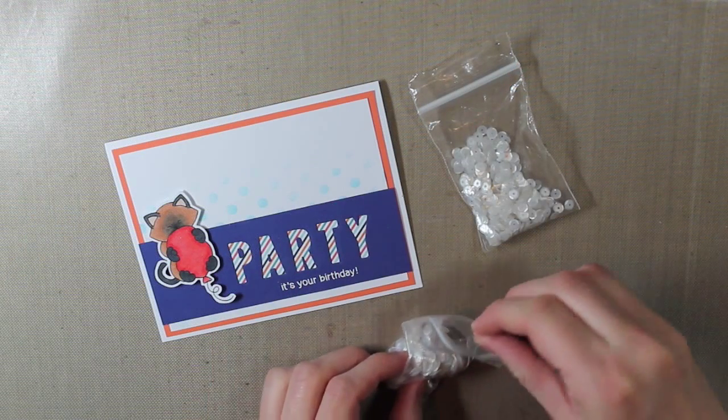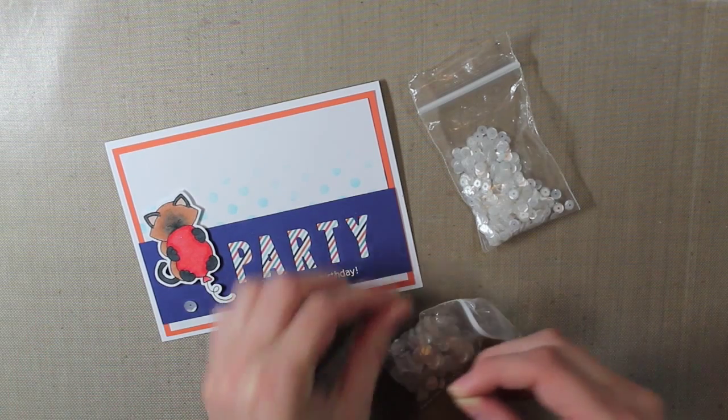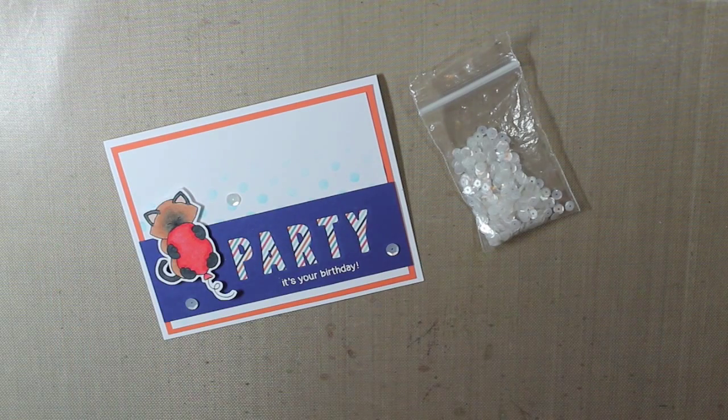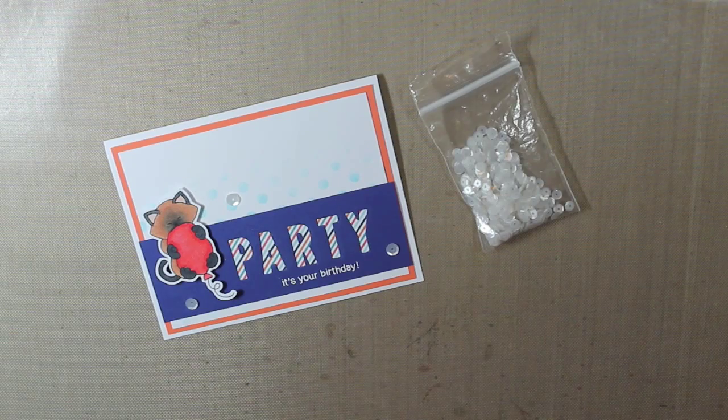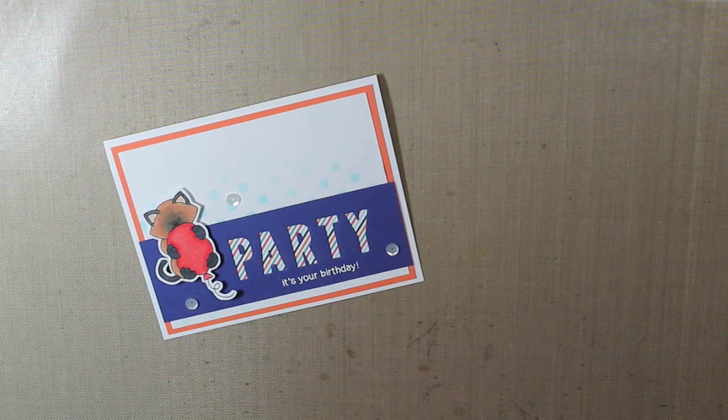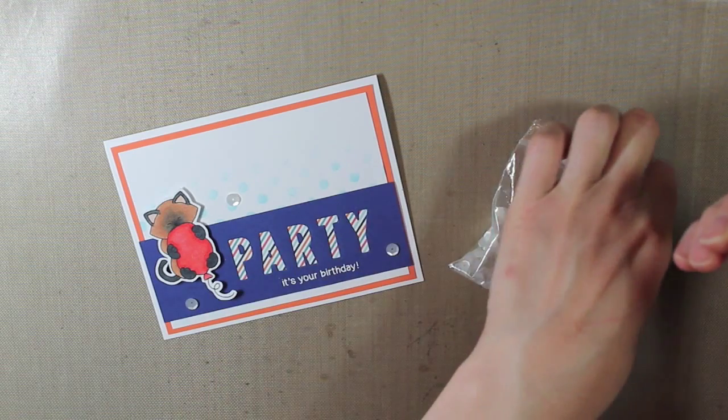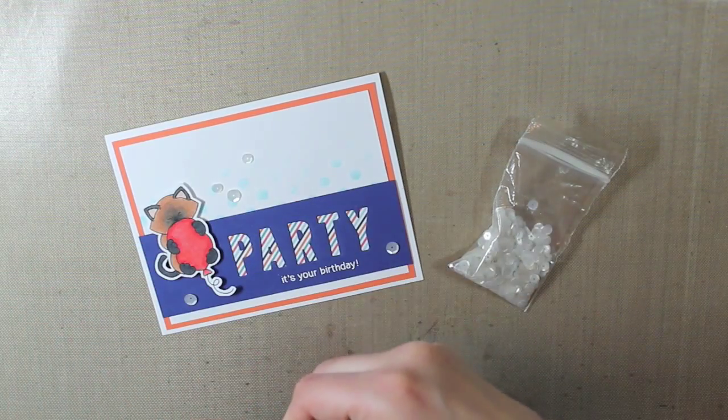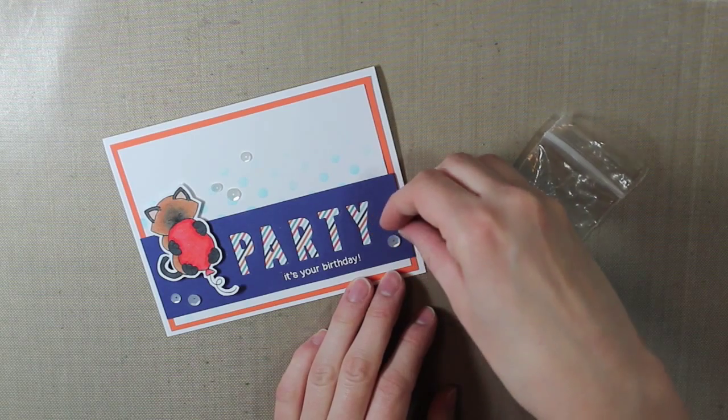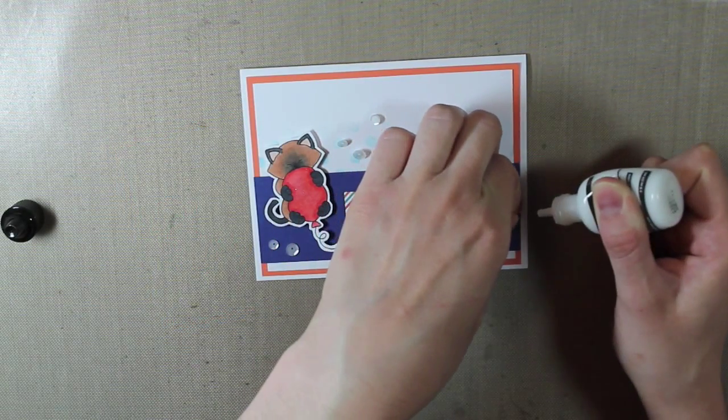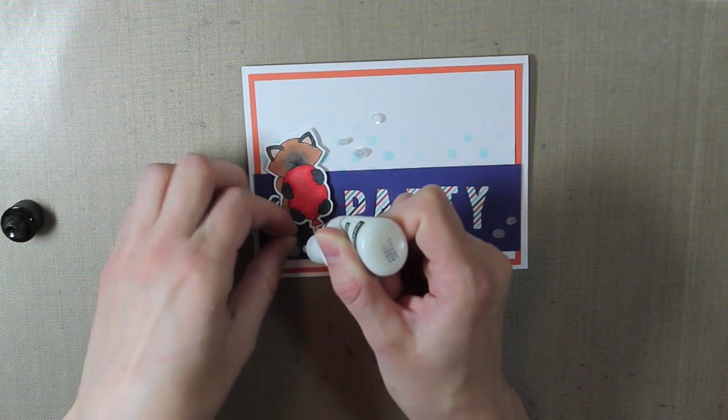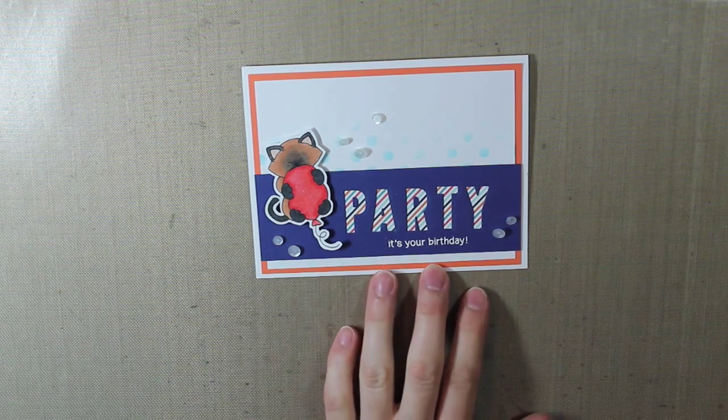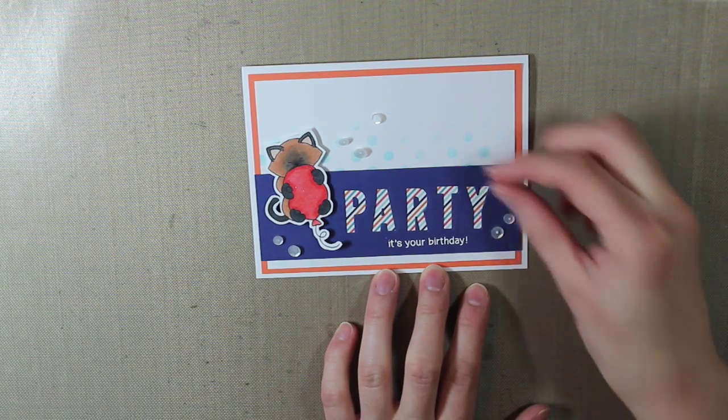Alright, so then I'm going to go ahead and adhere down some sequins. I'm just randomly scattering these. These are from Pretty Pink Posh. They are the white ones and they are 6 and 4mm I believe. Or they could be 5mm. I'm not really sure. So I'm going to scatter those down and then I'll go ahead and adhere them into place with my multi-medium matte. You could also use Glossy Accents or the Tombow Mono Multi Glue to adhere those into place. I just like to put a little dot of adhesive and then I press the sequin down into the glue. All of the supplies I am using on this card will be linked below if you're interested in any of them.